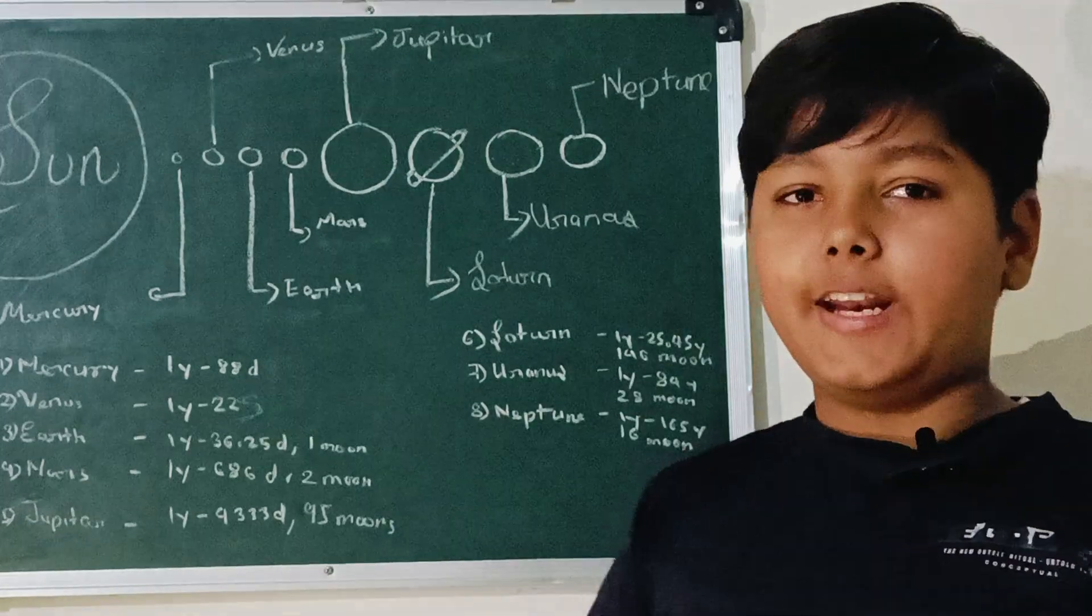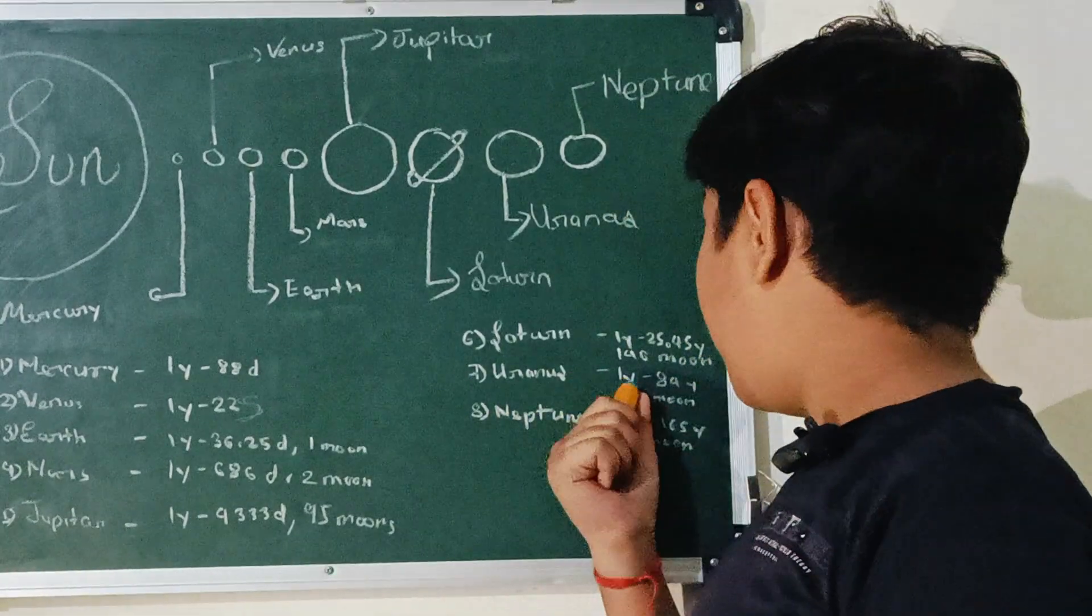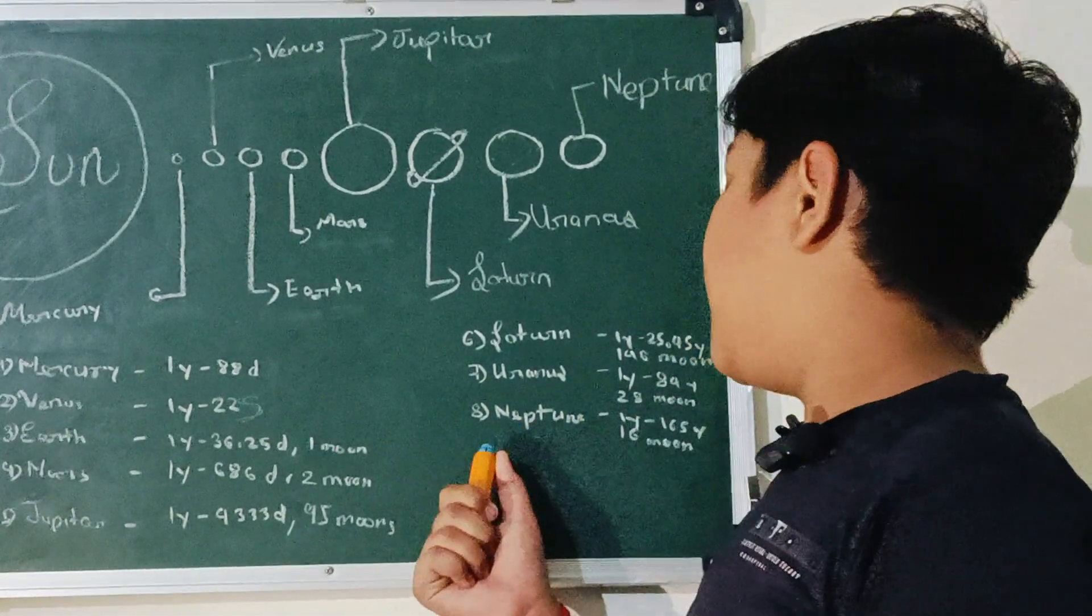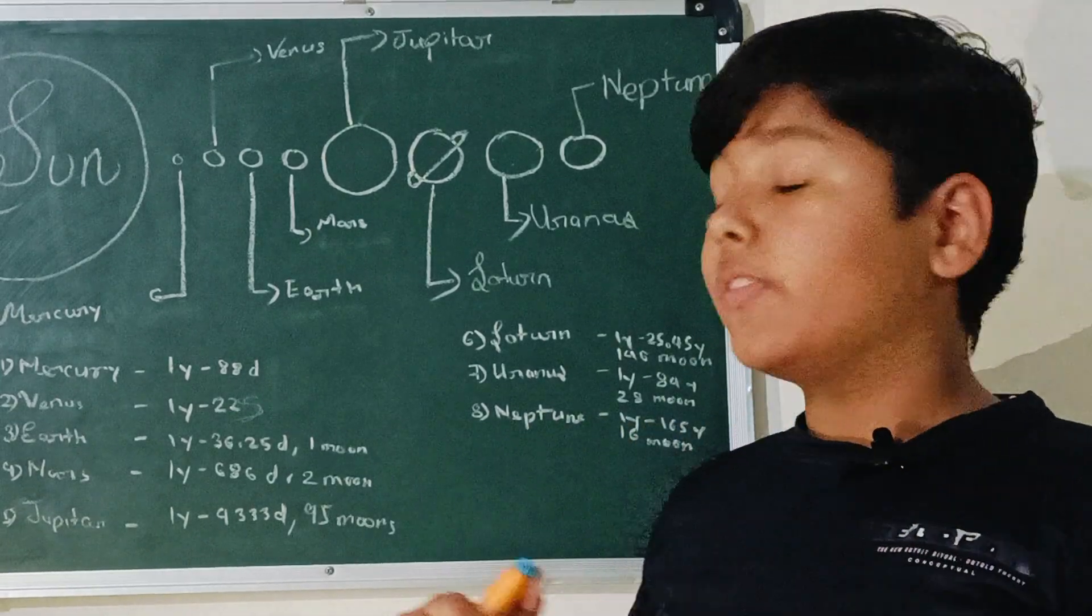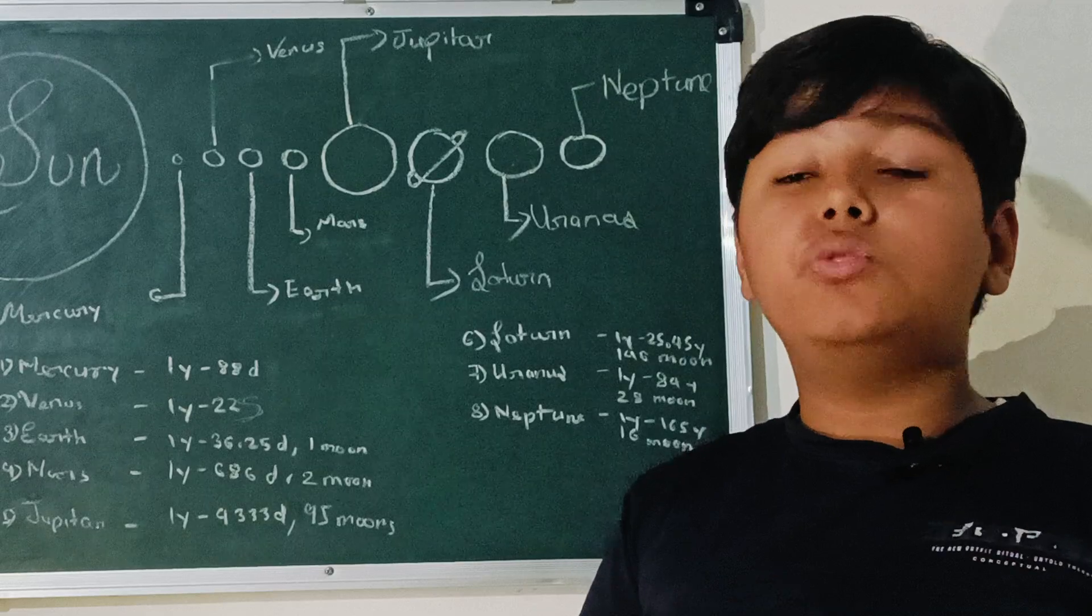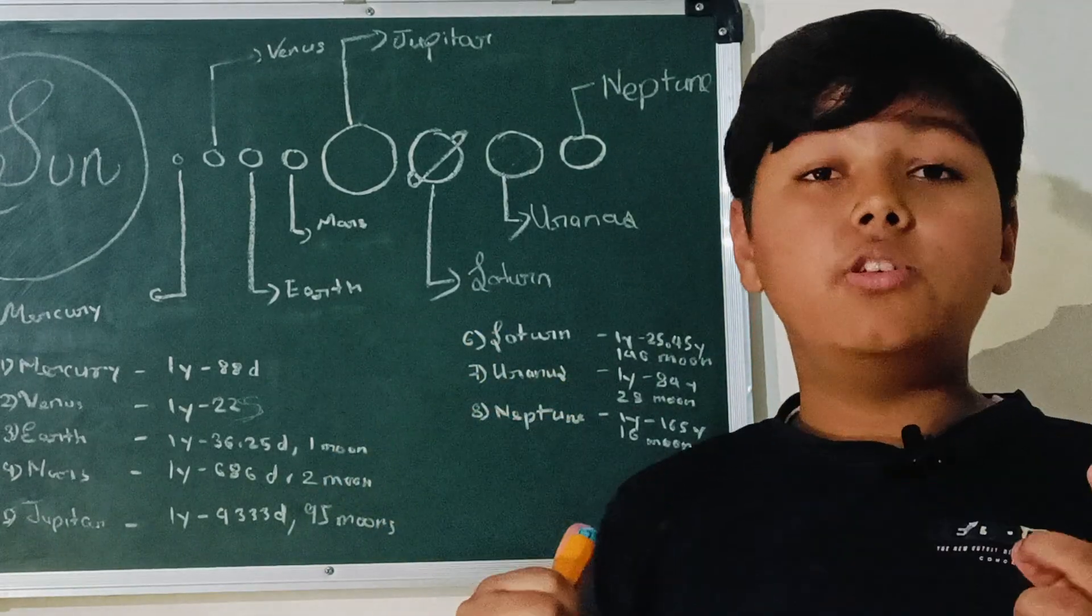Then after that comes Uranus. Uranus, one year is equal to 84 years. And Neptune, one year is equal to 165 years. Uranus has 28 moons and Neptune has 16 moons.